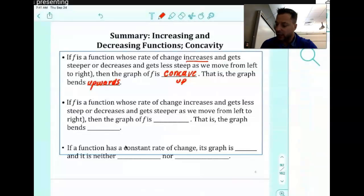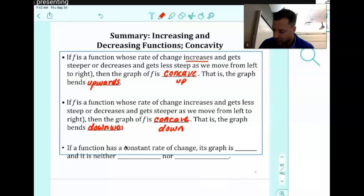Secondly, if a function whose rate of change increases and gets less steep or decreases and gets steeper as we move from left to right, then the graph is concave down. It opens downward. This is just getting from those pictures on the previous page. I would mostly stick to the pictures. The only thing that doesn't have concavity, really, is a line. A function that has constant rate of change, a line, is a graph that is neither concave up or concave down.